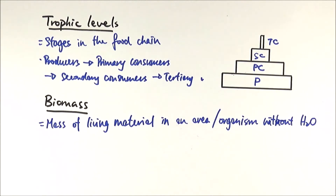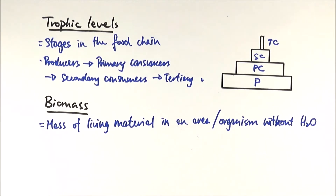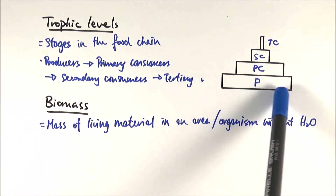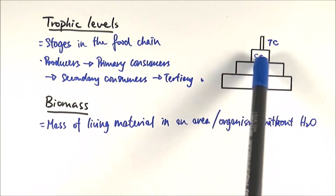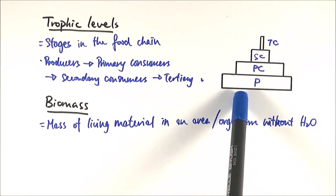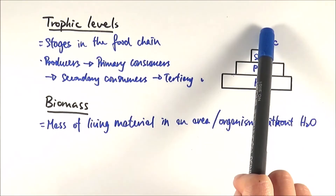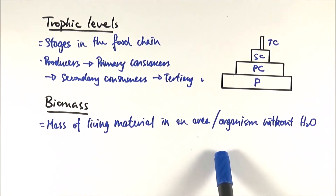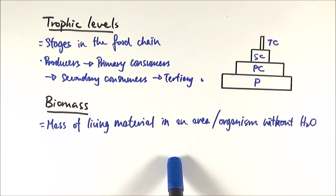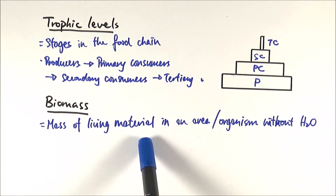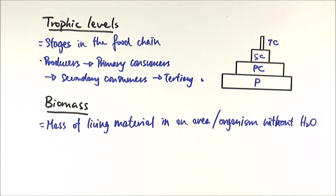We only consider the actual organic living material that makes up an organism, rather than including water in the mass. Biomass relates to energy content. So rather than stating the number of organisms at each level, we can express the biomass at each trophic level. In many exam questions, when they ask you to calculate ecological efficiency, this can be correlated to biomass.